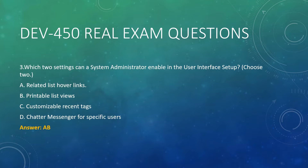Question 3. Which two settings can a system administrator enable in the user interface setup? Choose two. A. Related list hover links. B. Printable list views. C. Customizable recent tags. D. Chatter Messenger for specific users. Answer: A, B.